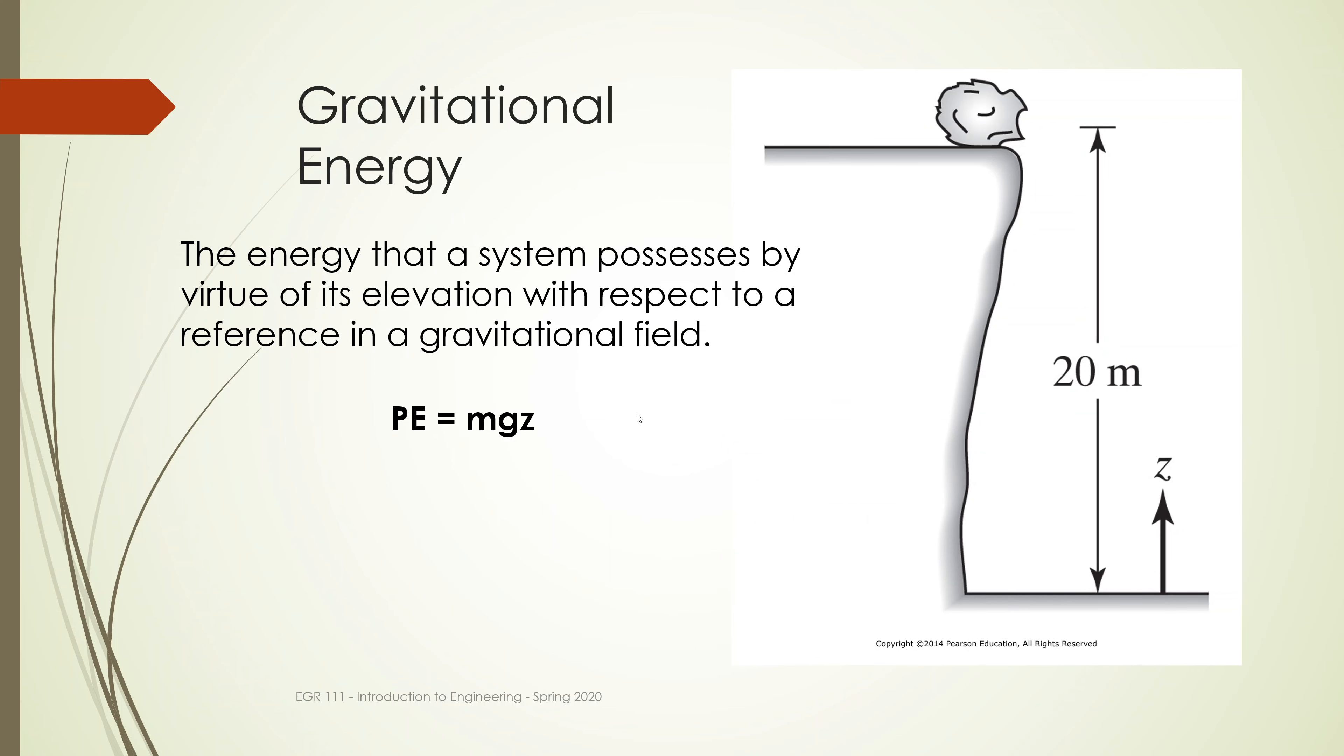We also have gravitational energy. If you take an object and lift it a certain height off the ground, you need to define a reference point first. You've added potential energy, which is the mass times gravitational acceleration times how far you've lifted it off the ground or reference point.